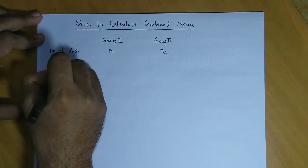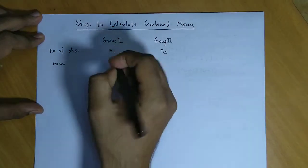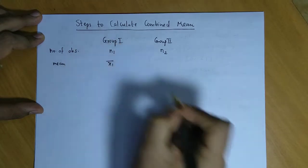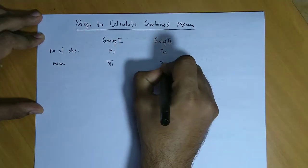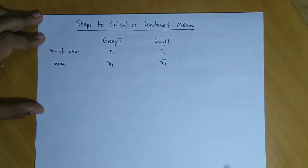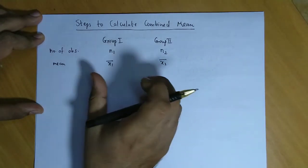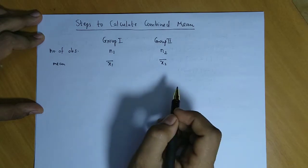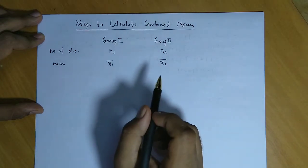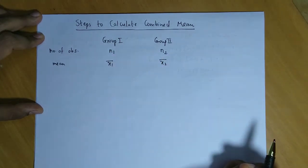The mean value of group one is x1 bar, and the mean value for group two is x2 bar. Now how do we combine the mean for the two groups? We have to find the common mean for the two groups taken together.